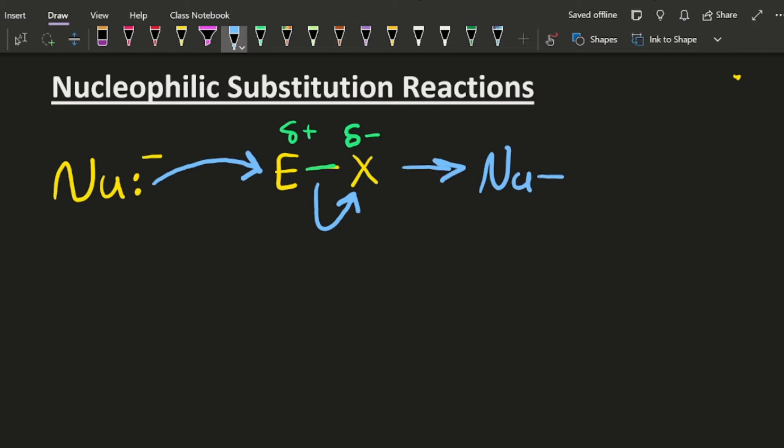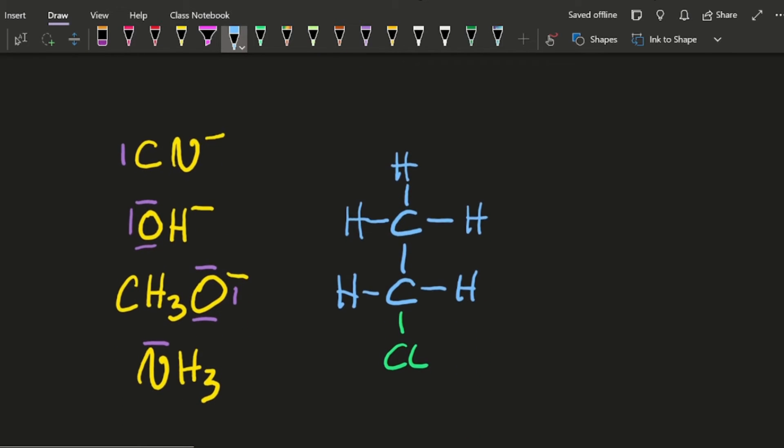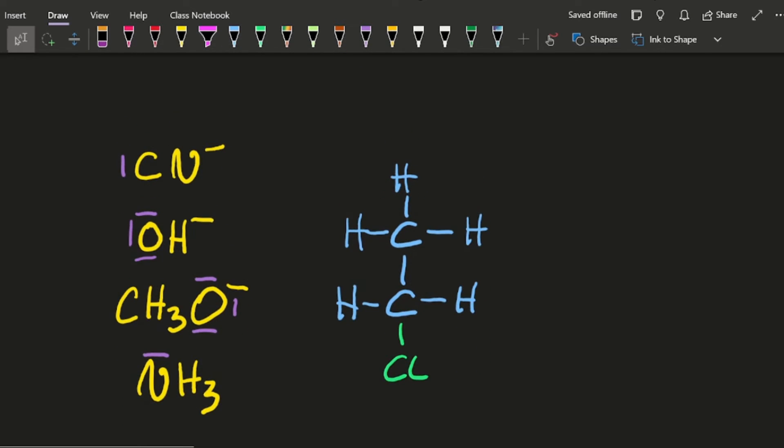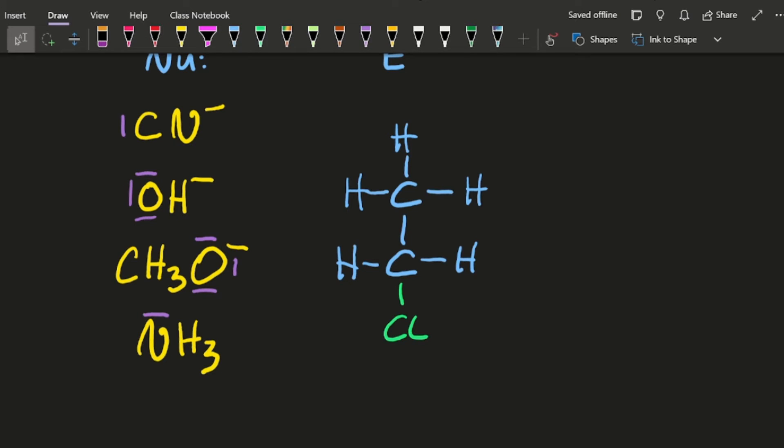What does that leave us with? So that's N-U-E and then the leaving group has left. Wallop. The textbook has these four nucleophiles that you seem to have to know. And that's the electrophile. And so it's the same old, same old each time.